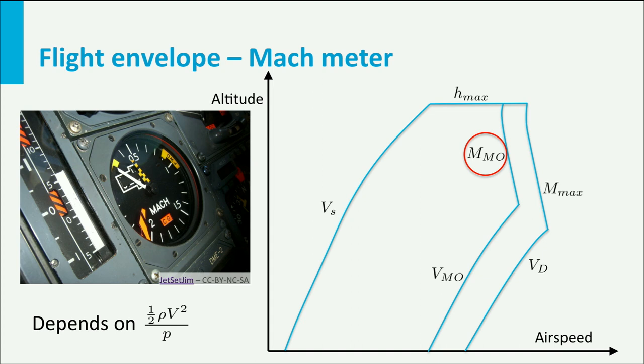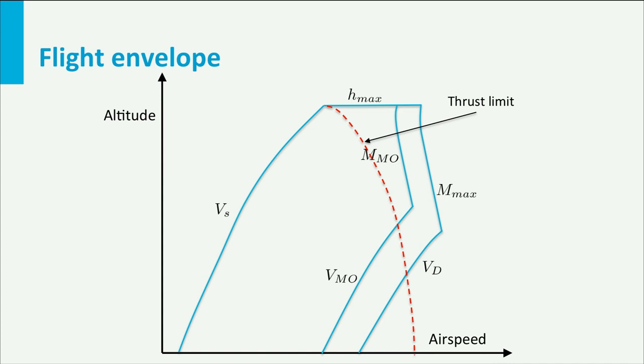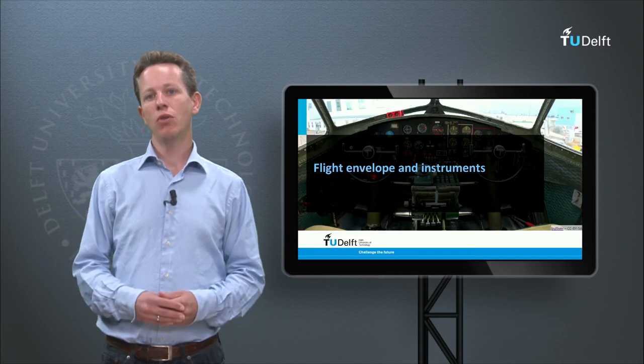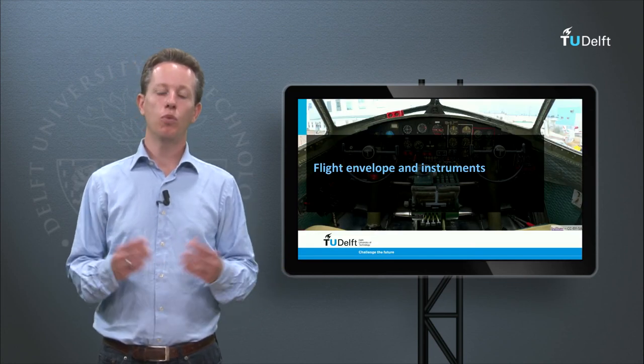If I now go back to the operational limits and the performance limits, then there is only one limit covered by the indicators. The maximum airspeed limit. This limit cannot be exceeded and therefore does not have to be indicated. It will be reached when maximum power is applied at a constant altitude. This concludes the discussion on how the pilot can monitor the limits whilst flying.